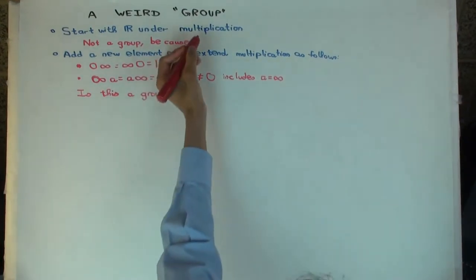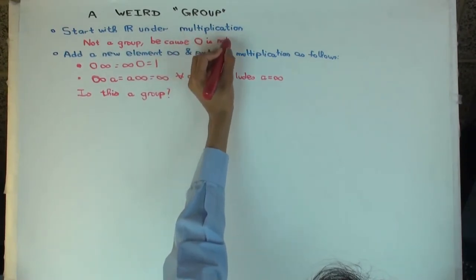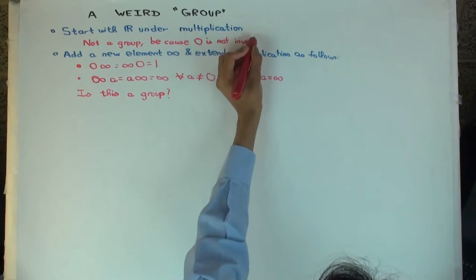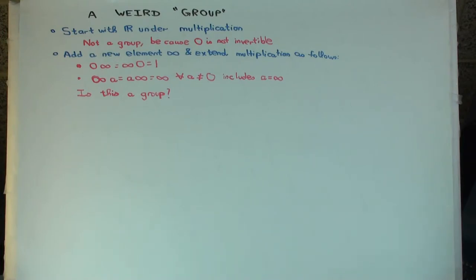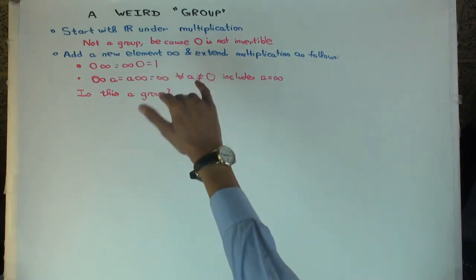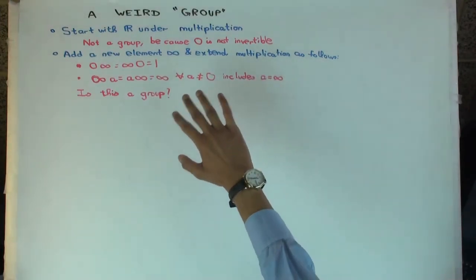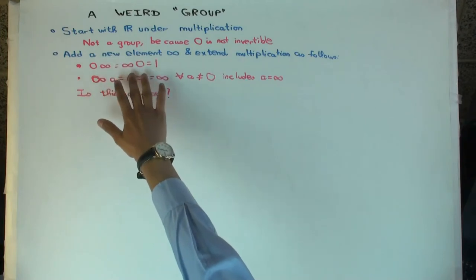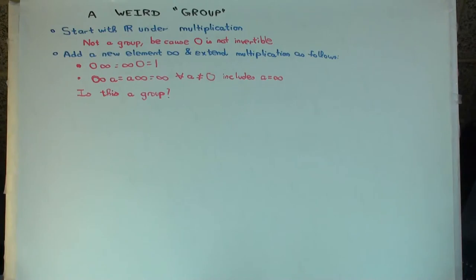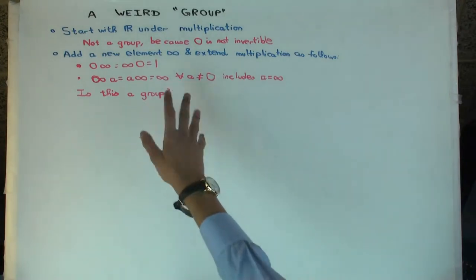Well, my idea is to just introduce a new element. You already have ℝ and you add in a new element which is separate from all the things already in ℝ, and you call that infinity. You extend the multiplication: things you already know how to multiply you just multiply as before. But now you have to specify how to multiply infinity with any real number. The first condition is to make zero invertible: zero times infinity equals infinity times zero equals one. The second condition says infinity times anything other than zero is just infinity. This gives you a binary operation.